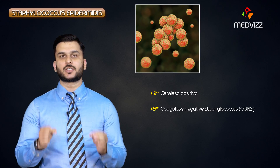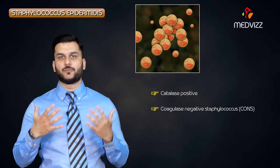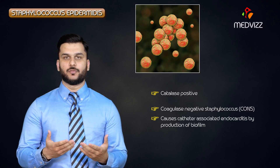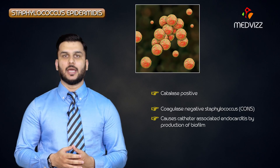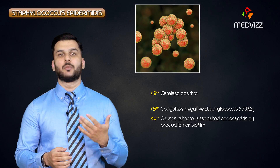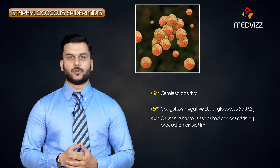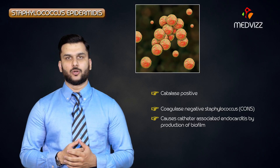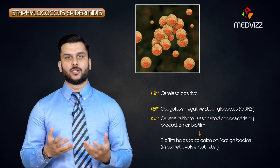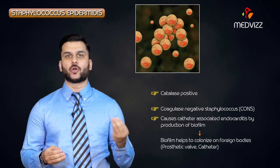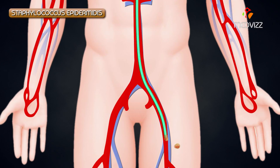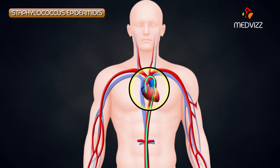The species we are discussing here is Staphylococcus epidermidis. It is associated with catheter-associated endocarditis. The feature that helps it cause this disease is the production of biofilm, which allows it to colonize foreign bodies like prosthetic valves or catheters. That is how it moves from the normal flora of the skin into the blood, and eventually to the heart, causing endocarditis.